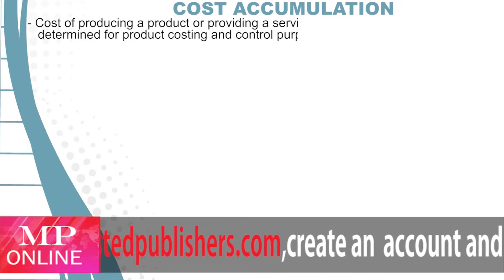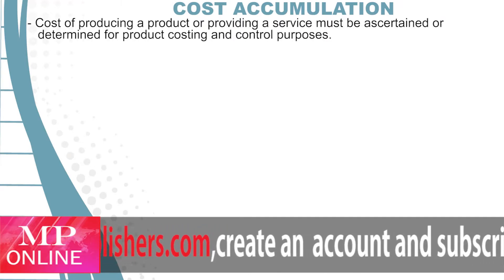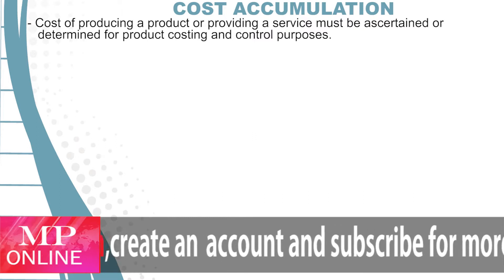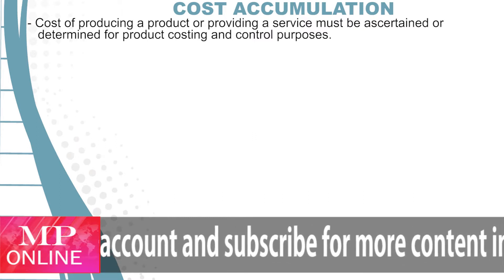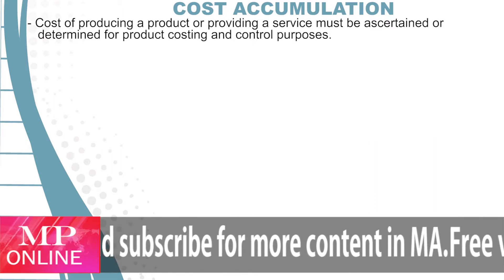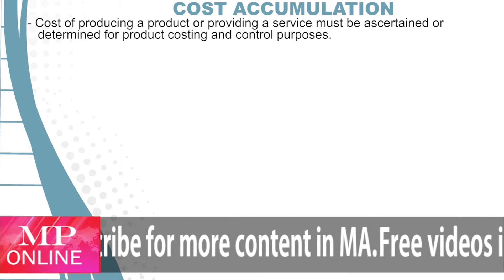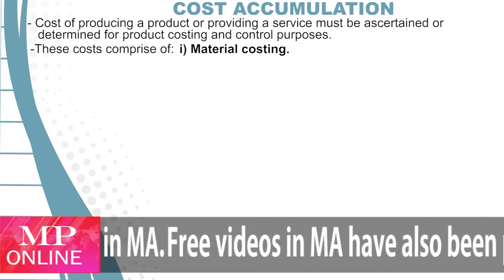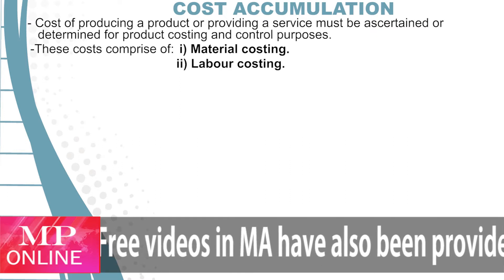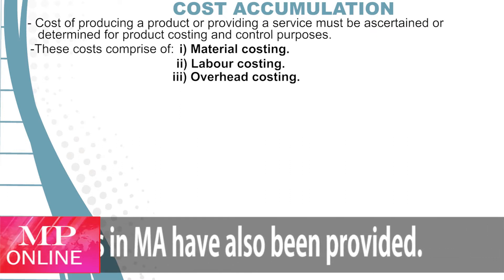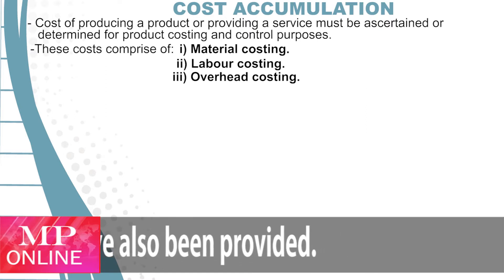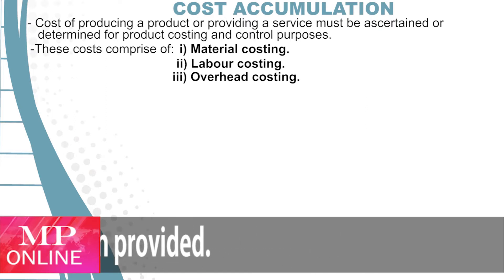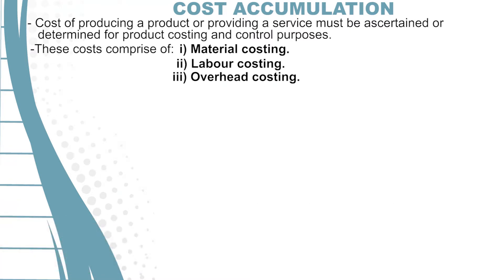The cost of producing a product or providing a service must be ascertained or determined for product costing and control purposes. These costs comprise of material cost, labor costs, and overhead costs. Therefore, cost accumulation covers: Roman one, material costing; Roman two, labor costing; Roman three, overheads.